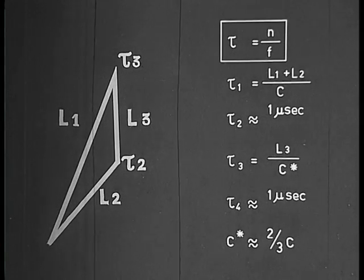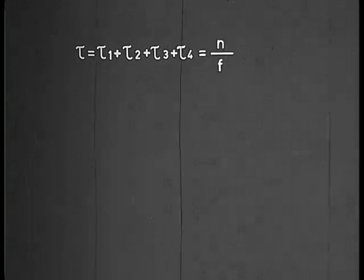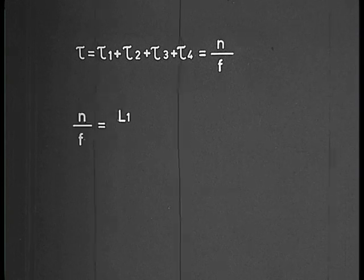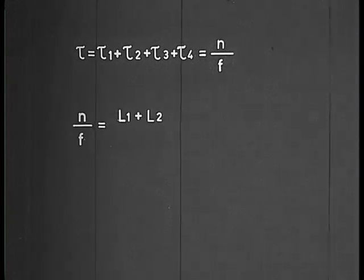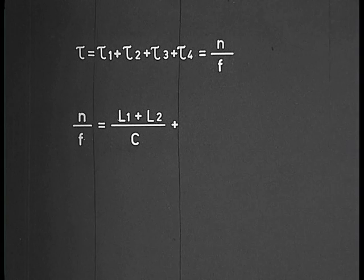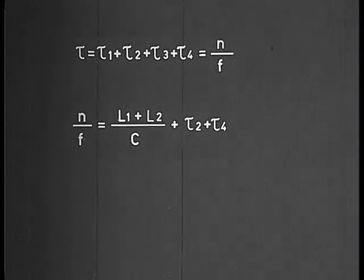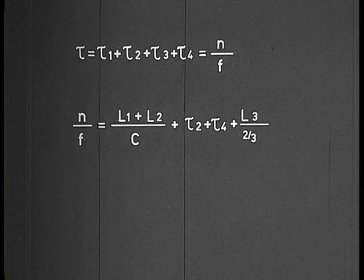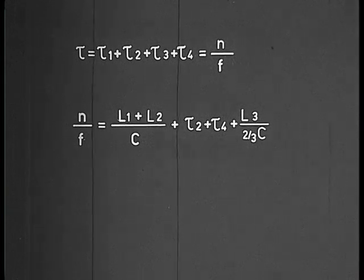Adding Tau 1, Tau 2, Tau 3, and Tau 4, we obtain L1 plus L2 over C plus Tau 2 plus Tau 4 plus L3 over two-thirds C equals N over F.